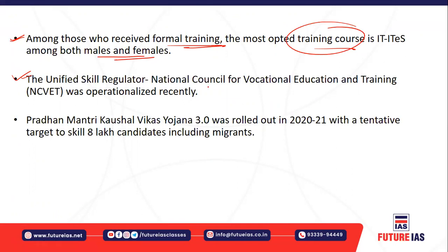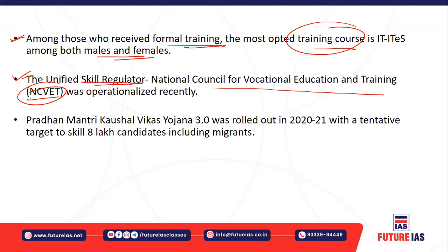Recently, the National Council for Vocational Education and Training (NCVET) was operationalized as a unified skill regulator to regulate formal training. Also, Pradhan Mantri Kaushal Vikas Yojana III was rolled out in 2020-21, with the main objective of skilling 8 lakh candidates through formal training, including migrants.